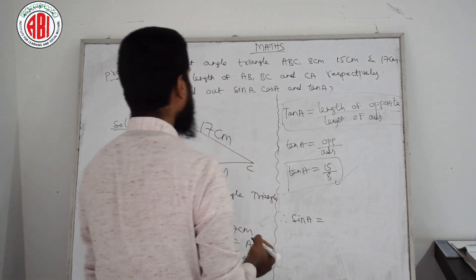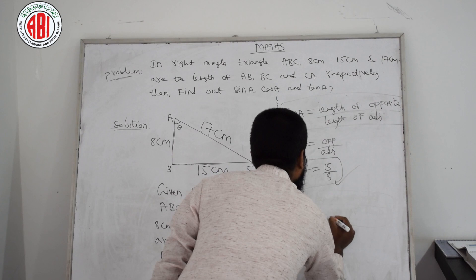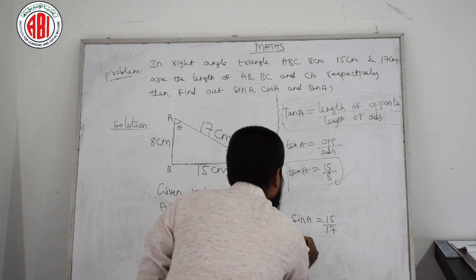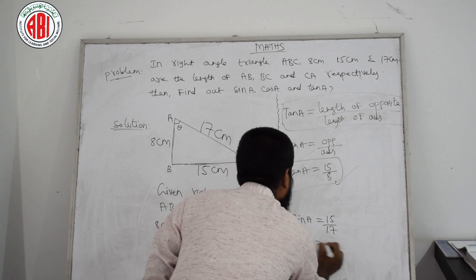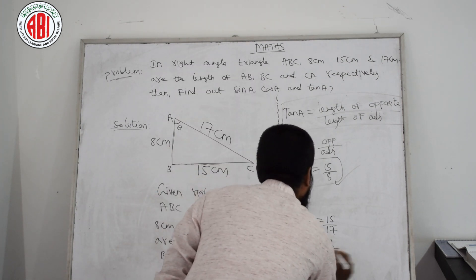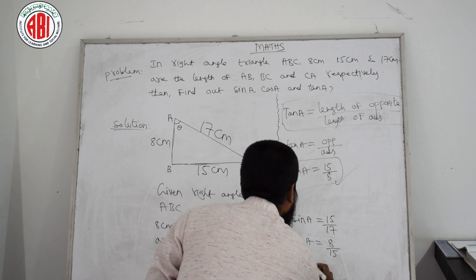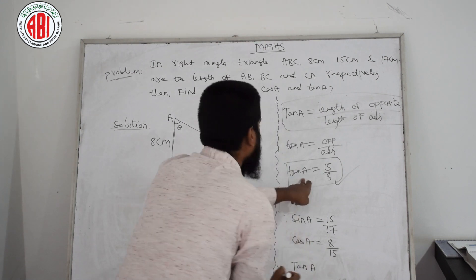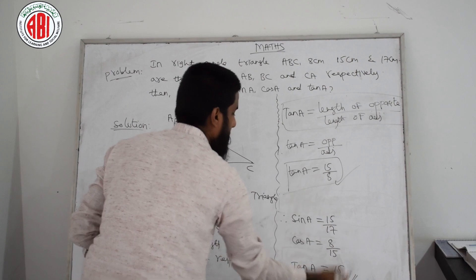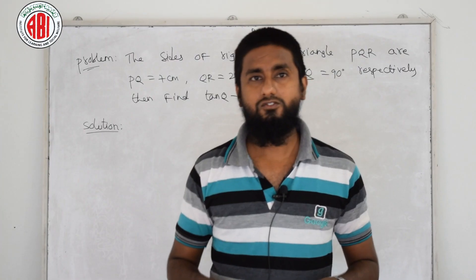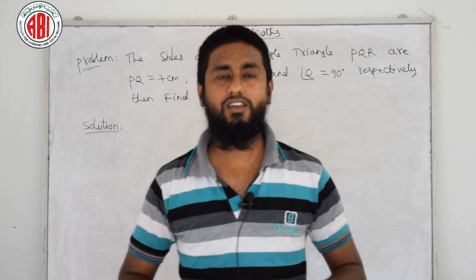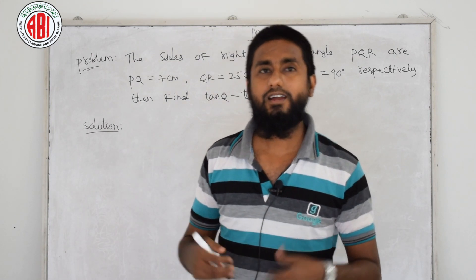Therefore, sin A equals 15 by 17, cos A equals 8 by 17, and tan A equals 15 by 8. These are our main answers. Hope you enjoyed the trigonometric ratios. We have done one problem — now I am solving the second problem.